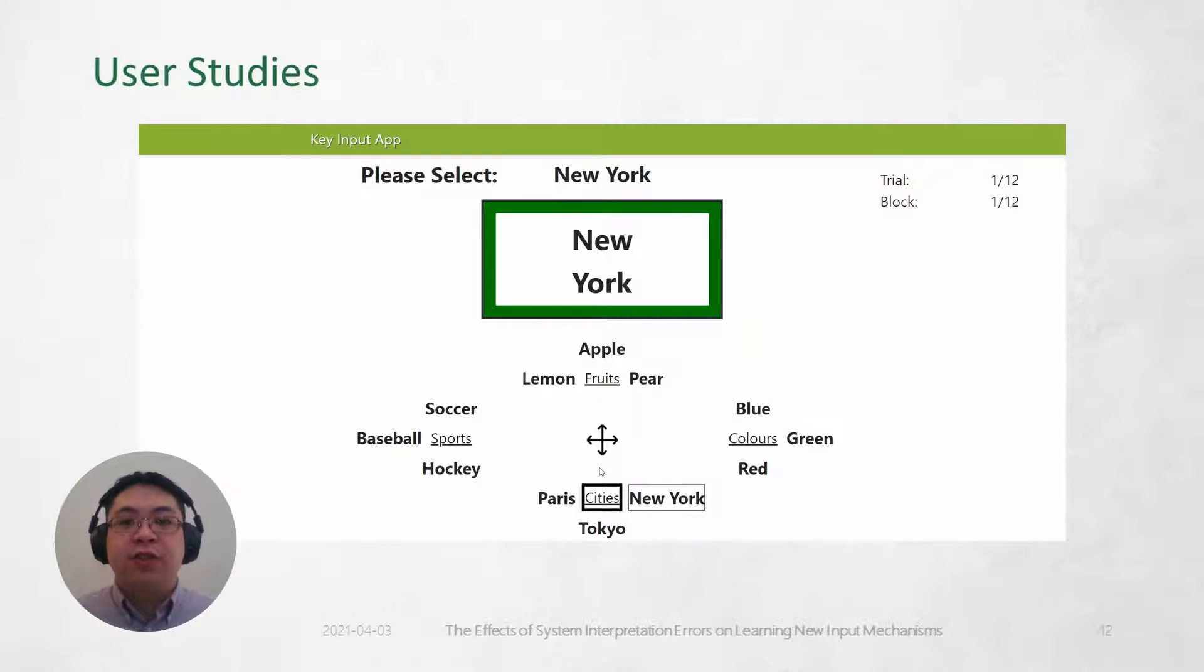Participants had access to a visual guide after pressing the left shift key. As they eventually memorized the location of the items, it became faster for them to select items from memory without using the guide.